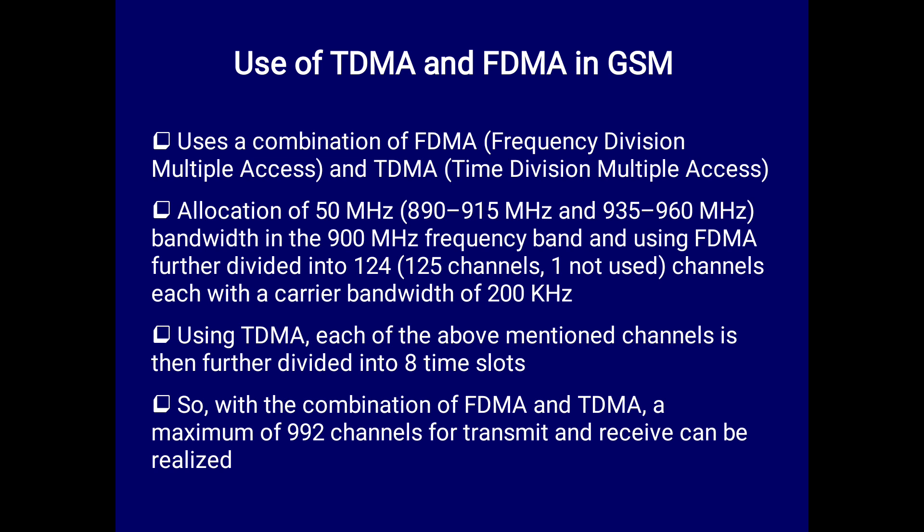Each 25 MHz band is further divided into 124 channels — there are technically 125, but one is not used, so we count 124. Each channel carries a bandwidth of 200 kHz. Using TDMA, each of these 124 channels is further divided into 8 time slots. The combination of FDMA and TDMA provides a maximum of 992 channels for transmit and receive.